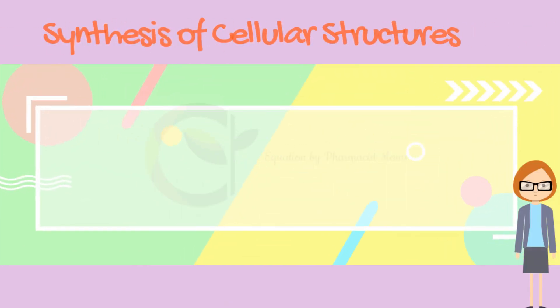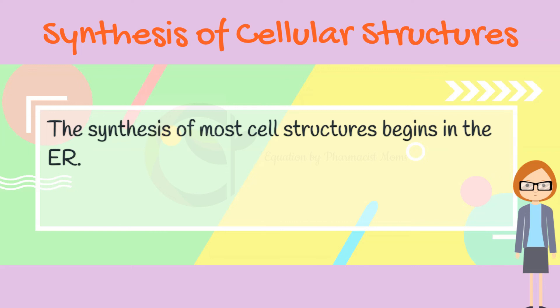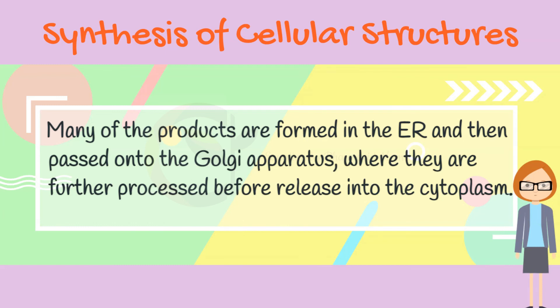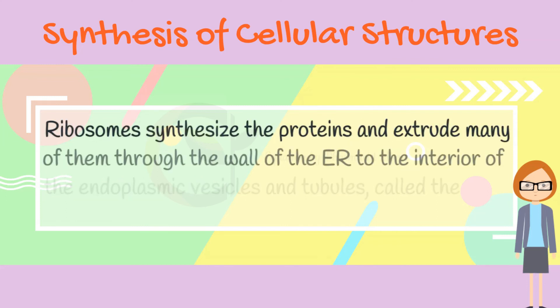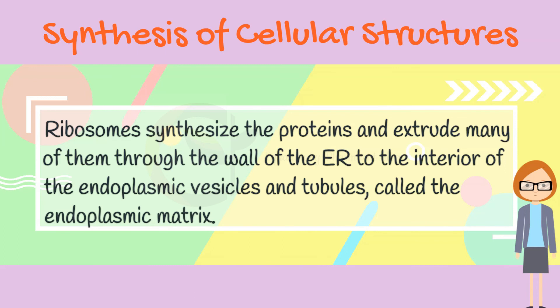How are cellular structures synthesized? The synthesis of most cell structures begins in the endoplasmic reticulum. Many of the products formed in the endoplasmic reticulum are then passed on to the Golgi apparatus, where they are further processed before release into the cytoplasm. The granular endoplasmic reticulum, characterized by large numbers of ribosomes attached to the outer surface, is the site of protein formation. Ribosomes synthesize the proteins and extrude many of them through the wall of the endoplasmic reticulum to the interior of the endoplasmic vesicles and tubules, called the endoplasmic matrix.